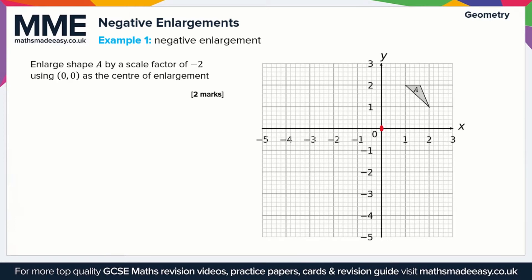We take the points of the shape and draw lines to the center of enlargement. For the top left corner of shape A, I'm going to go two squares down and one square to the left. Because this is a scale factor of minus two, I go another two squares down and one to the left, and the same distance again — twice the distance away from the center. Then for the bottom right corner, we go one down and two to the left to reach the center, then the same again to plot the new point.